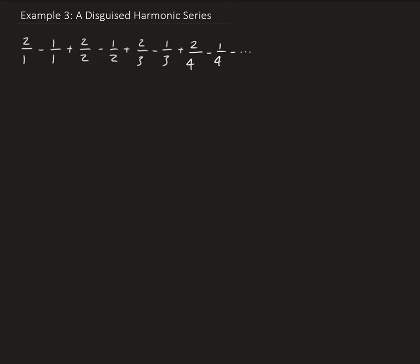Let's recall the conditions for the alternating series test. The first condition is that the limit of the nth term has to go to zero. And secondly, the n+1 term has to be less than or equal to the nth term.